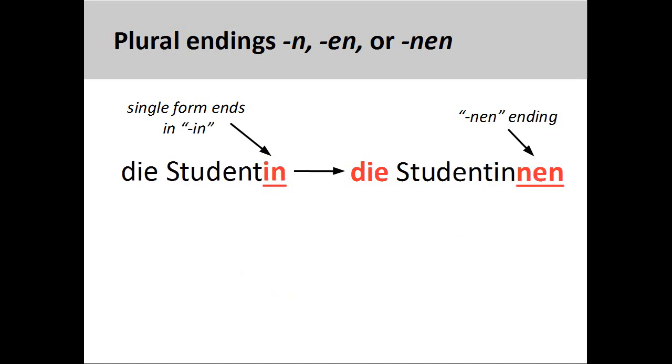All feminine nouns ending in -in, such as Studentin, a woman student, will have the plural ending -nen, Studentinnen.